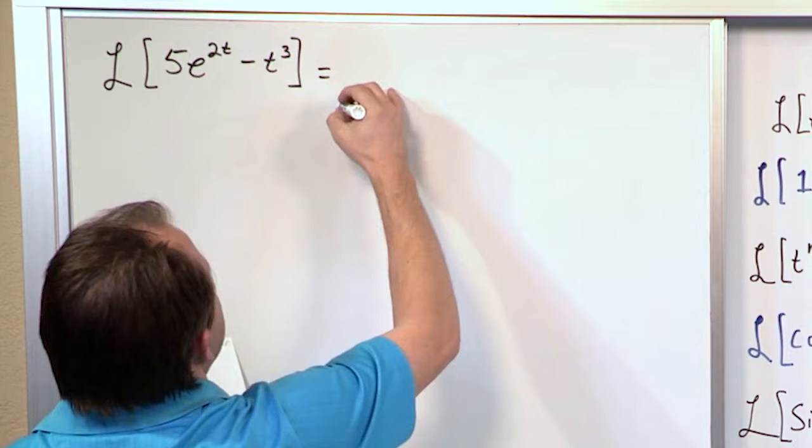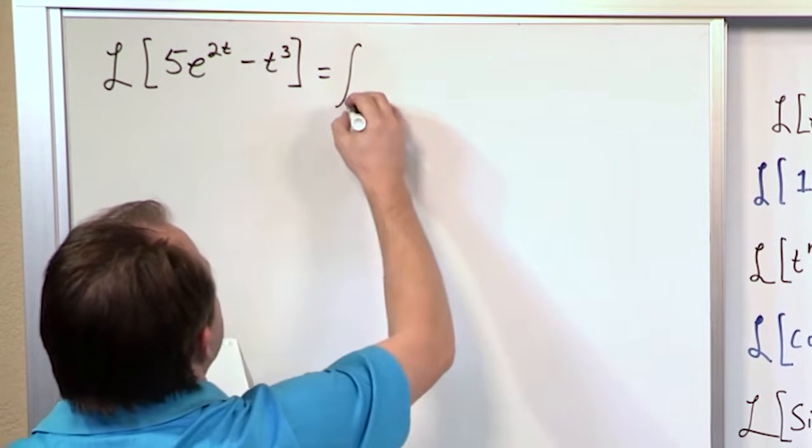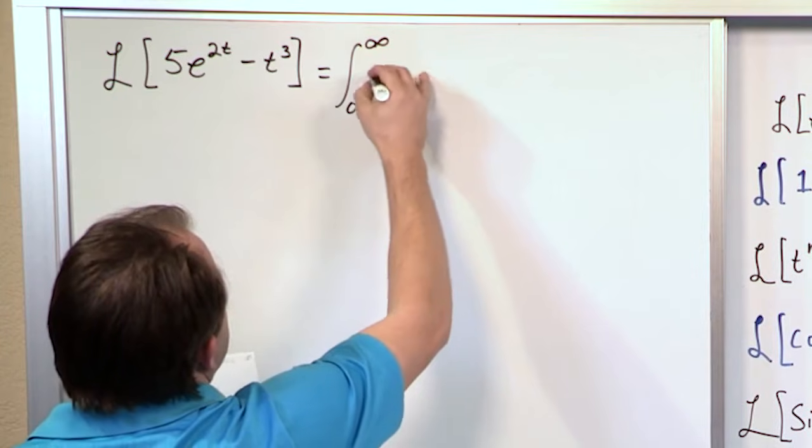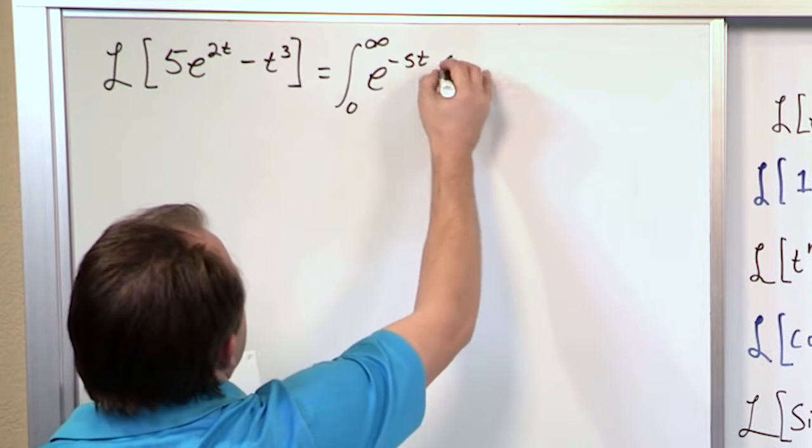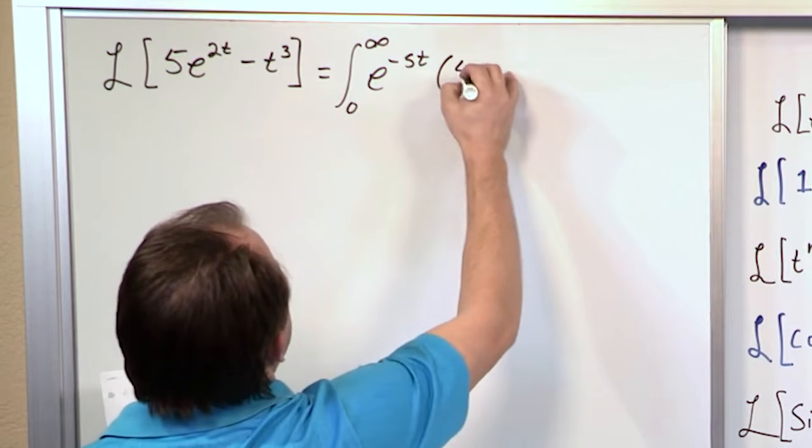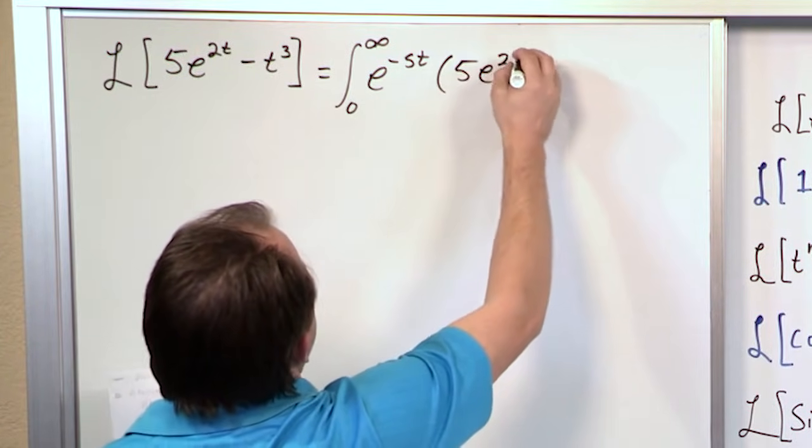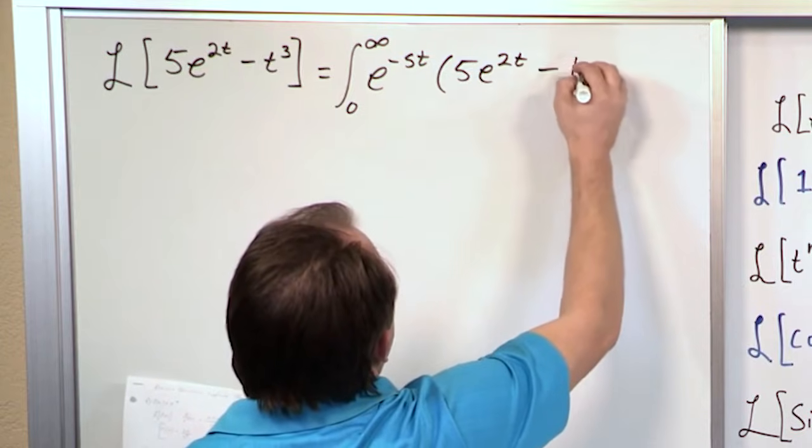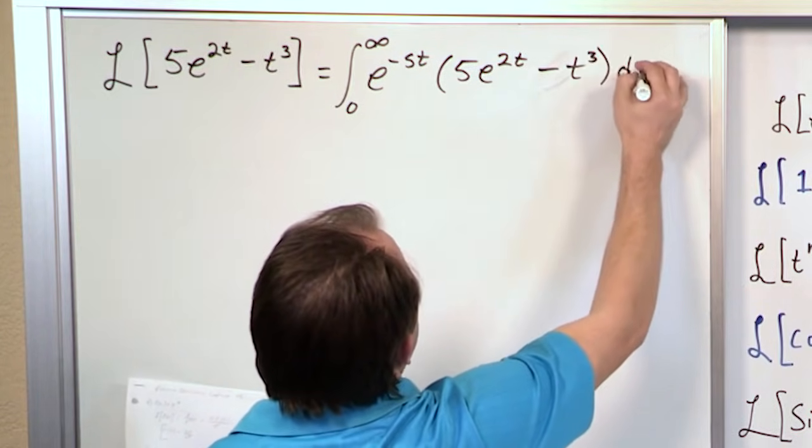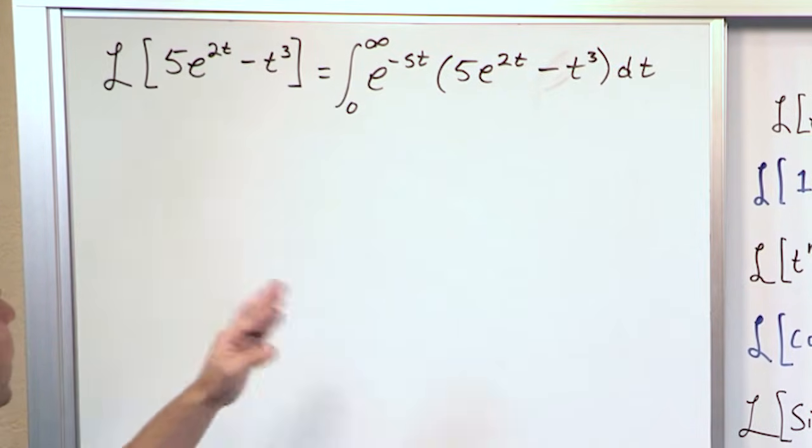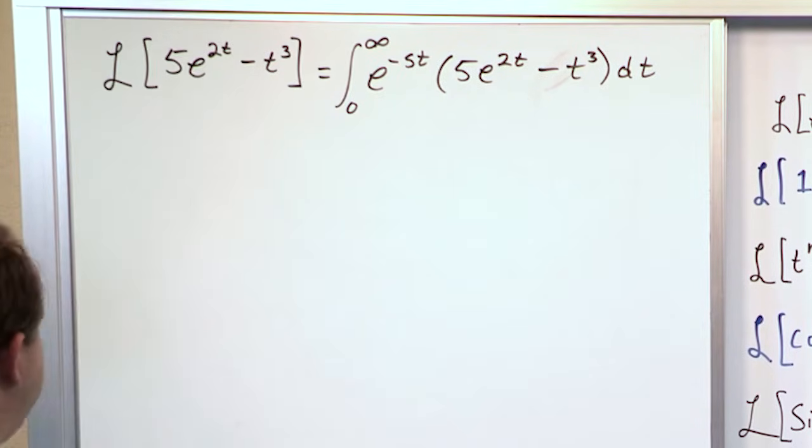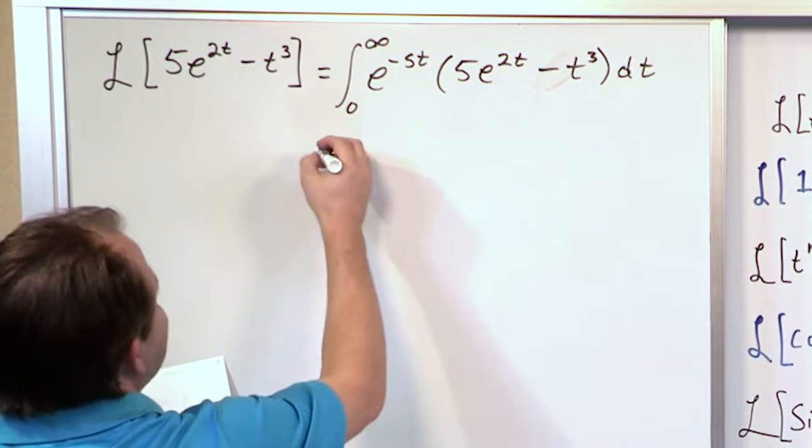So what you would have if you were doing it by the definition of the transform, which we're just doing here for clarity, just to kind of show you, integral e to the minus st, and then you open up parentheses and dump your function. And now your function is a linear combination of two things. It's got an exponential, and it's got a minus sign here, and it's got t cubed dt. So if I didn't know anything about this table of transforms, I would dump this in, and I would try to integrate it.